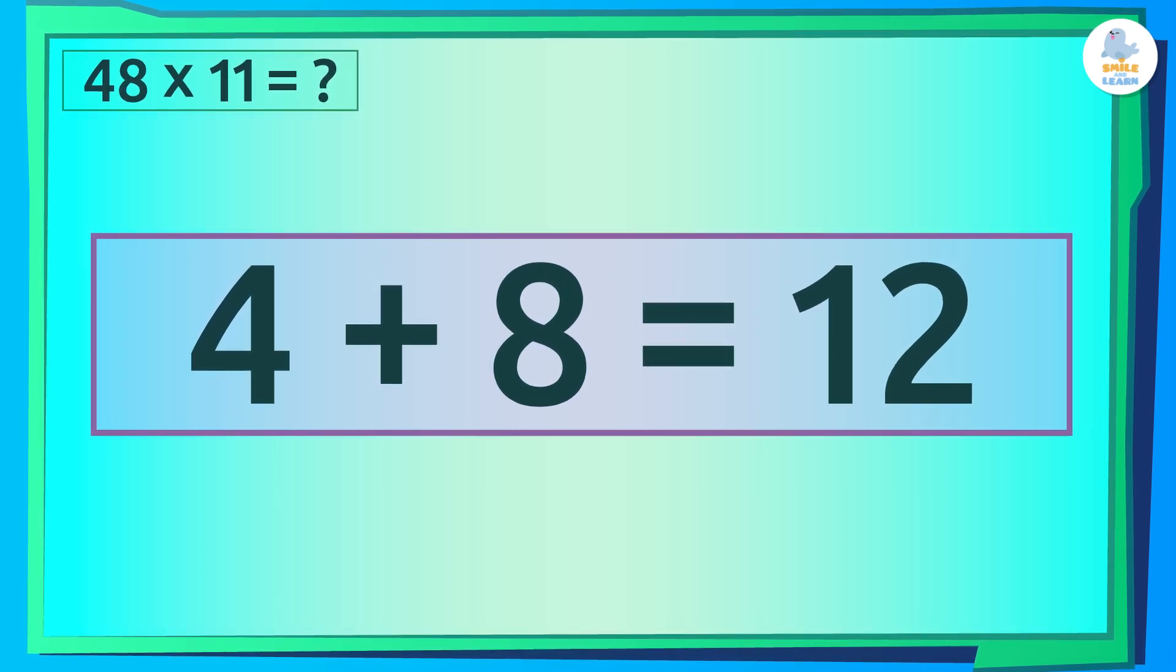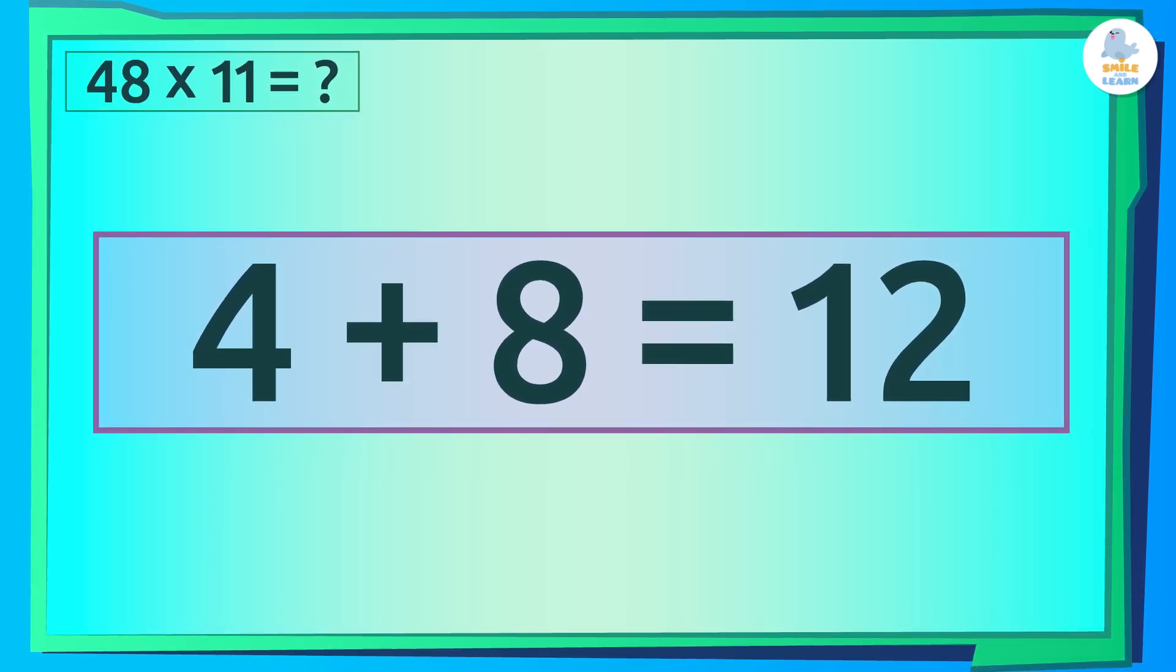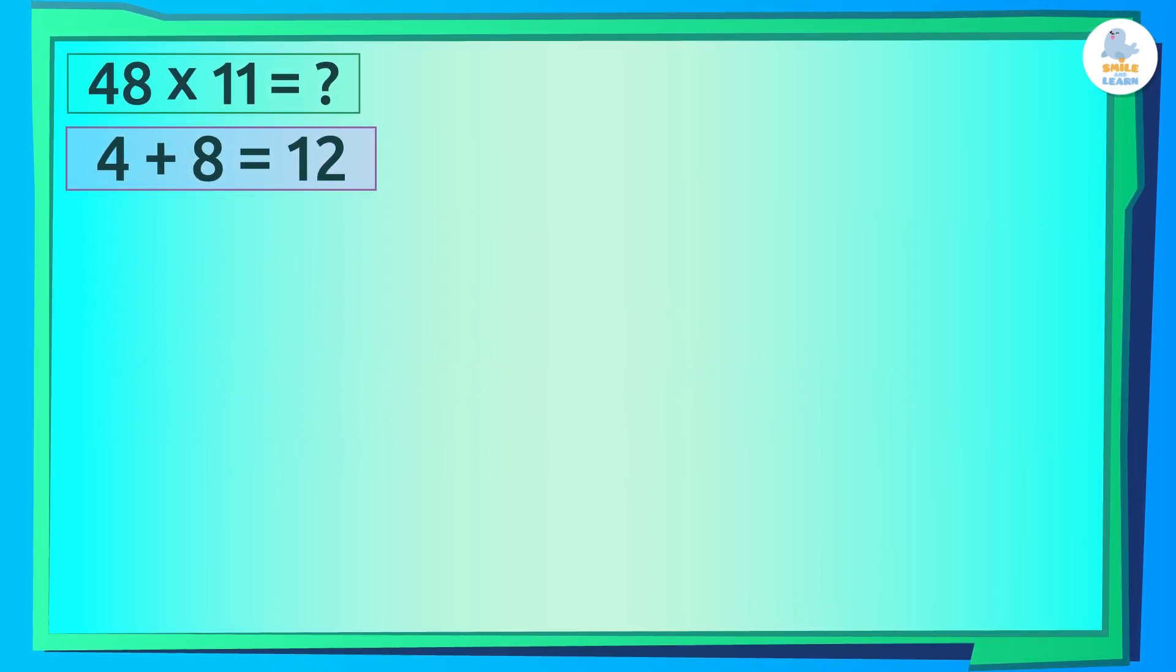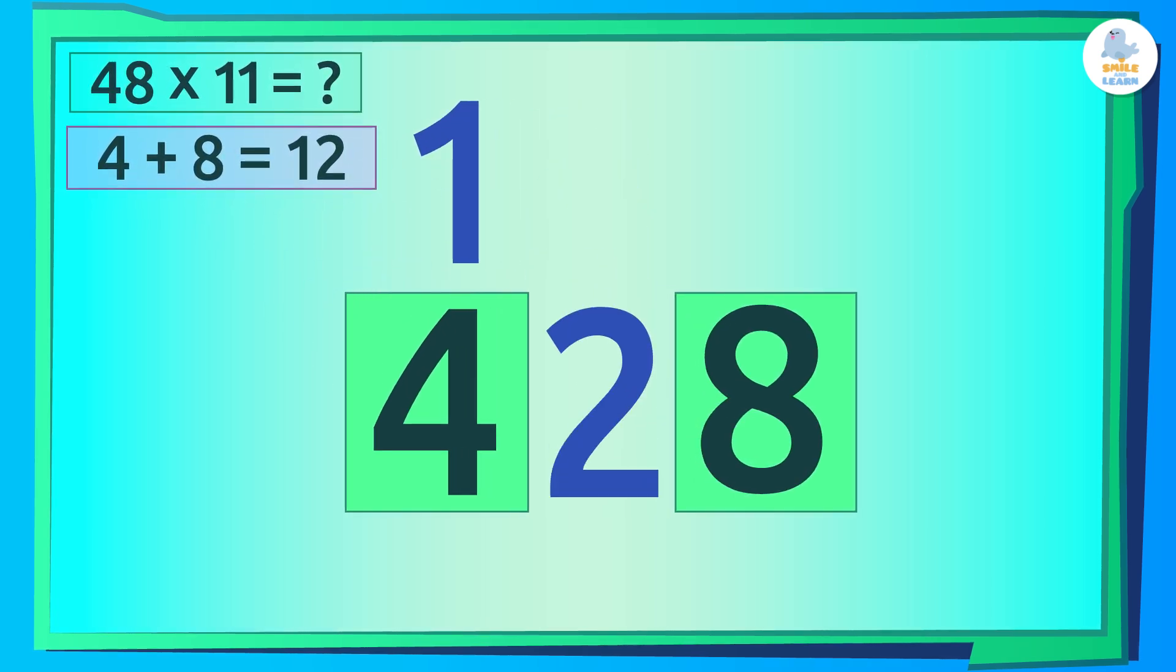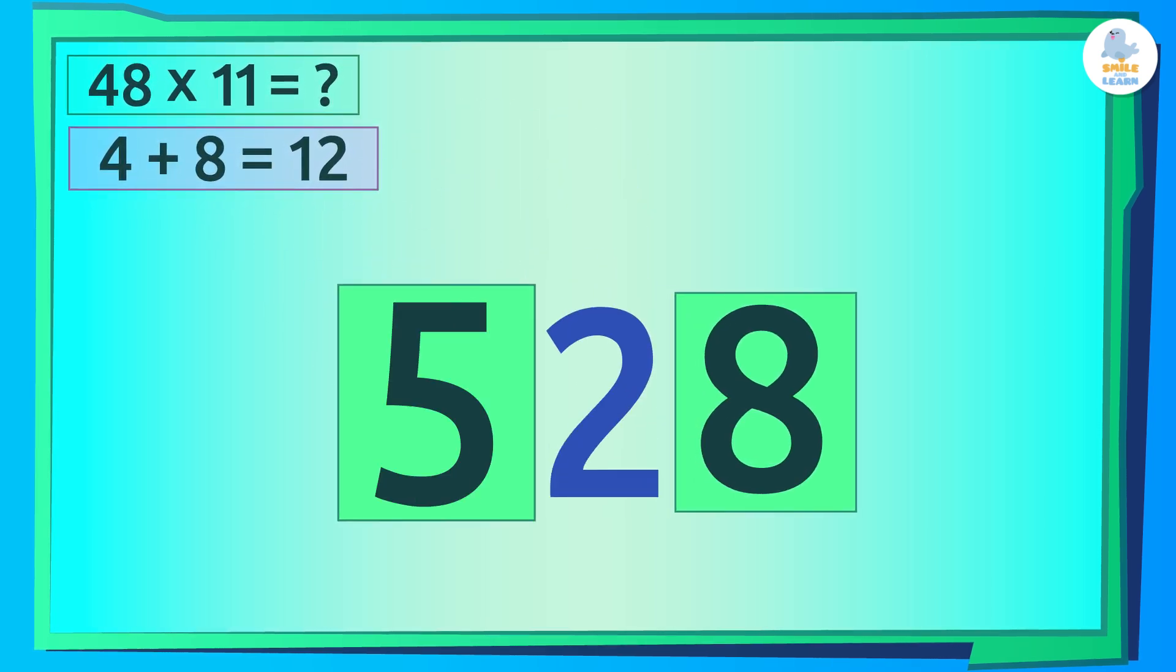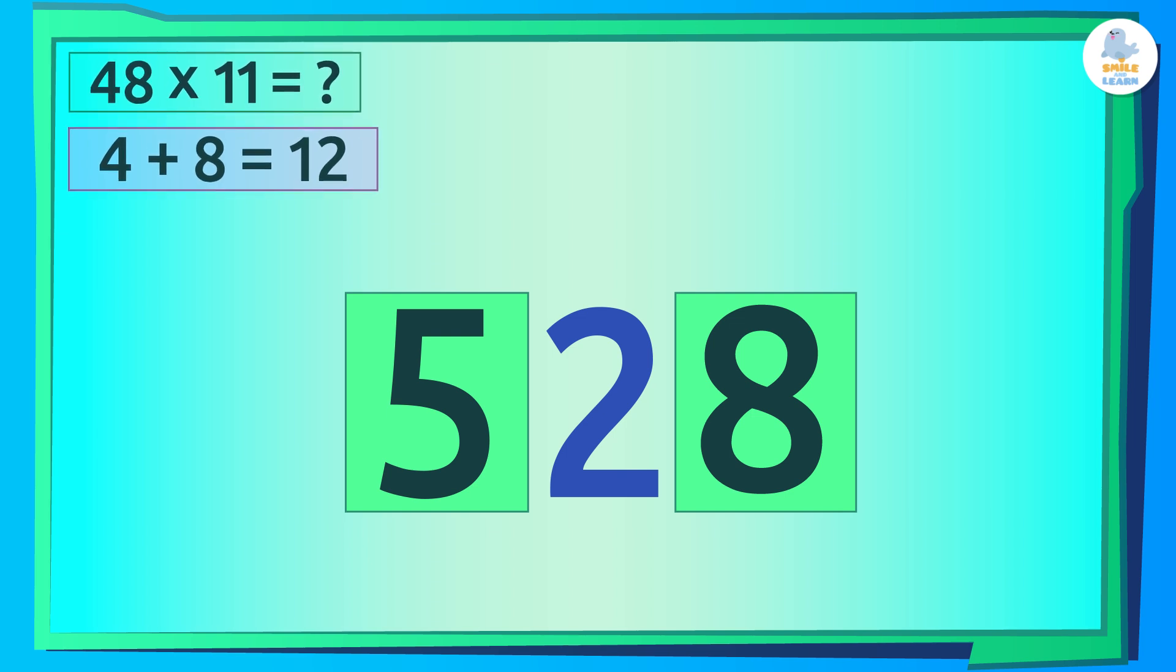Then we add those two digits. 4 plus 8 equals 12. To finish, we follow the steps you already know. We put the 2 in the middle and add the 1 to the first digit. That is, to the 4.